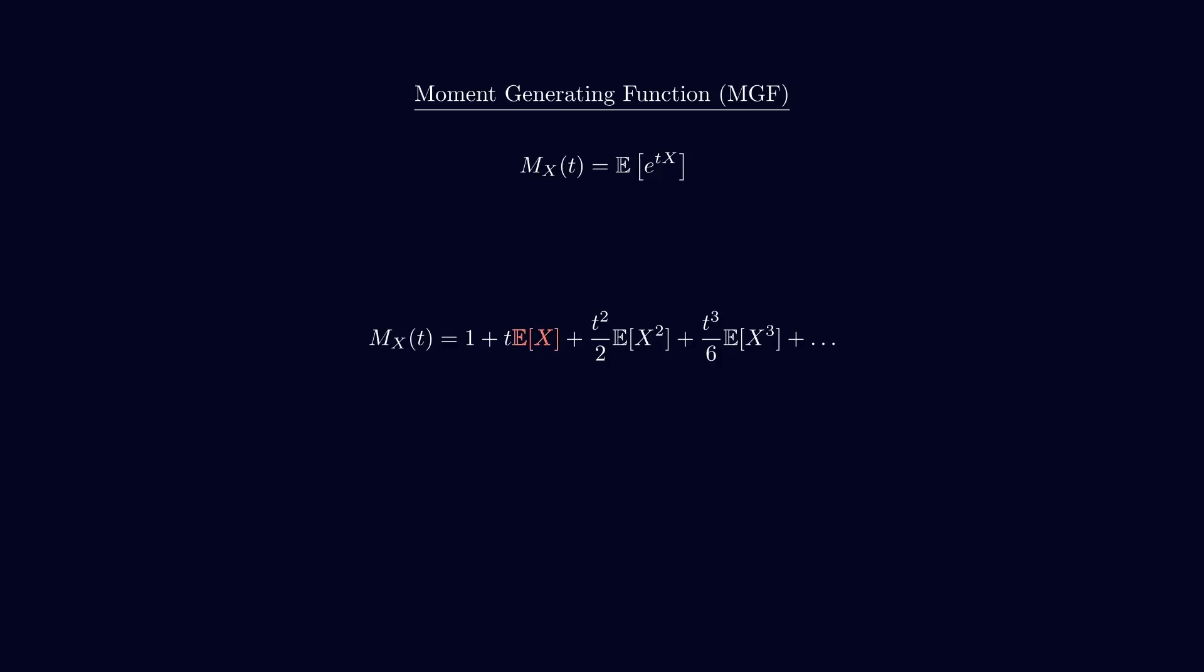If we want to calculate the first moment, the mean, here's what we do. First, we take the first derivative of the MGF with respect to t. Then, we evaluate this derivative at t equals 0. This gives us the first moment, more commonly called the mean of x.